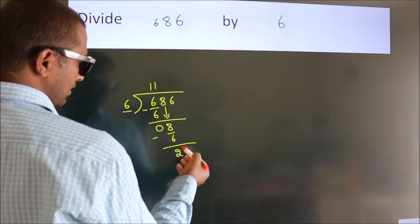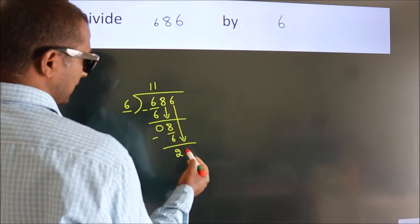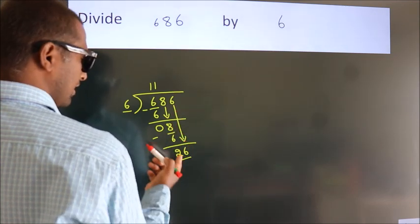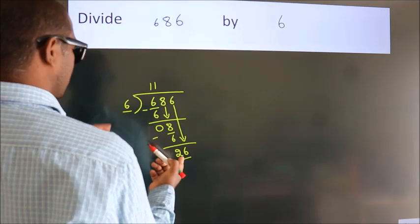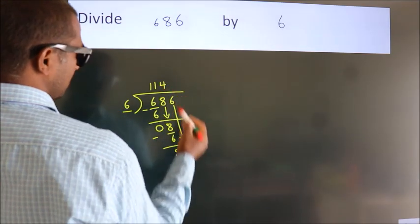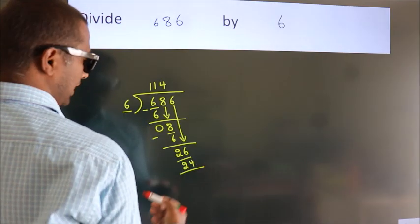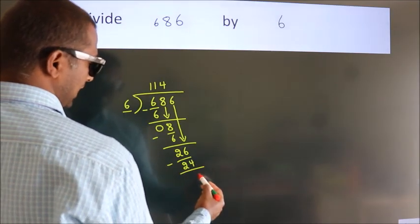After this, bring down the beside number. So 6 down. 26. A number close to 26 in the 6 table is 6 fours, 24. Now we subtract. We get 2.